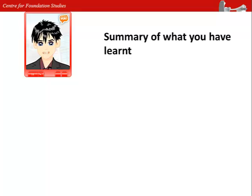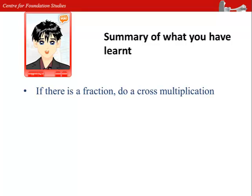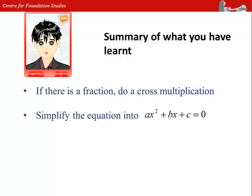We are coming to the end of the lesson. In this video lesson, you have learned how to solve quadratic equations. If there is a fraction on either side of the equation or both sides, do a cross multiplication. Simplify the equation into the form of ax squared plus bx plus c equals to 0. Find the factors and equate them to 0 and solve for the unknown.